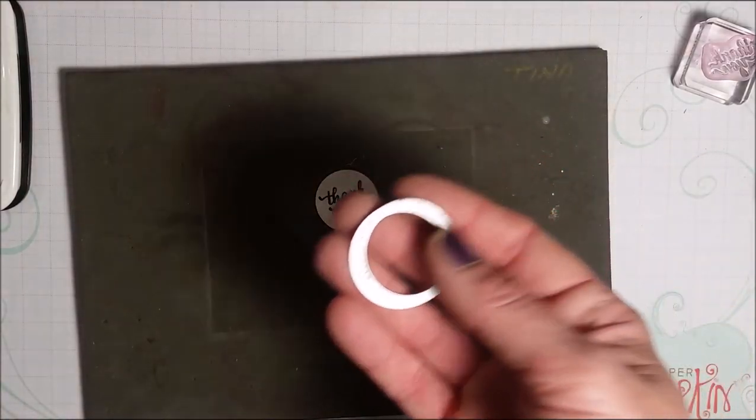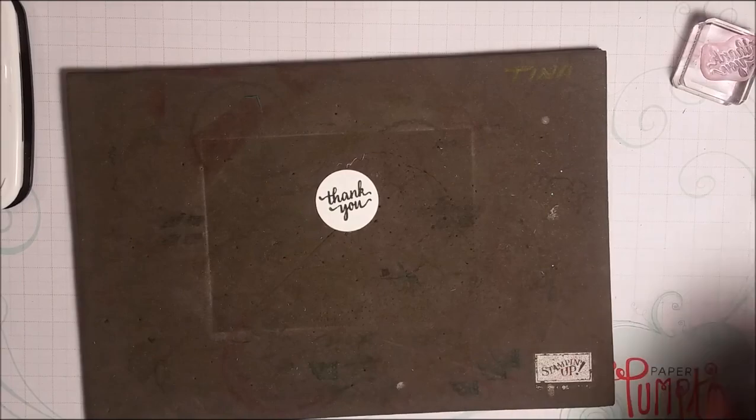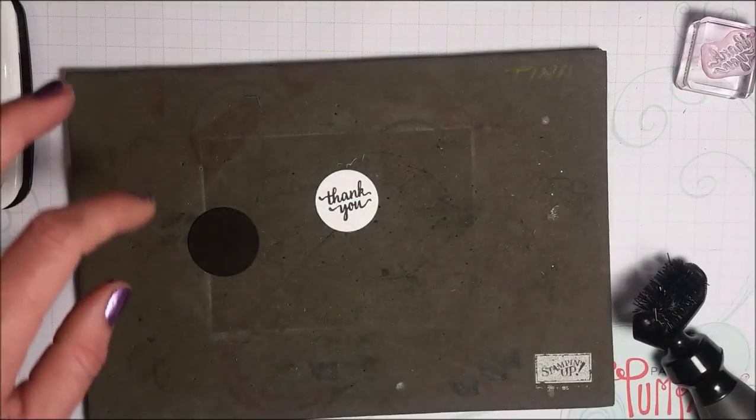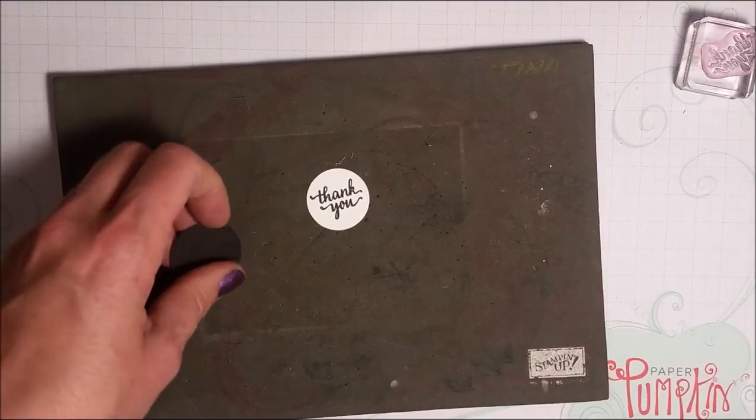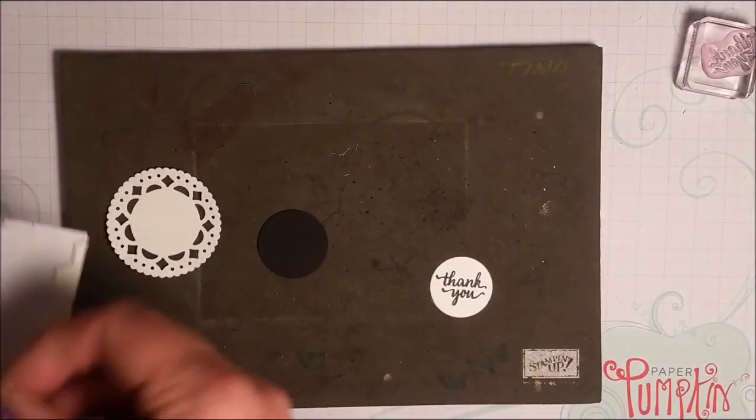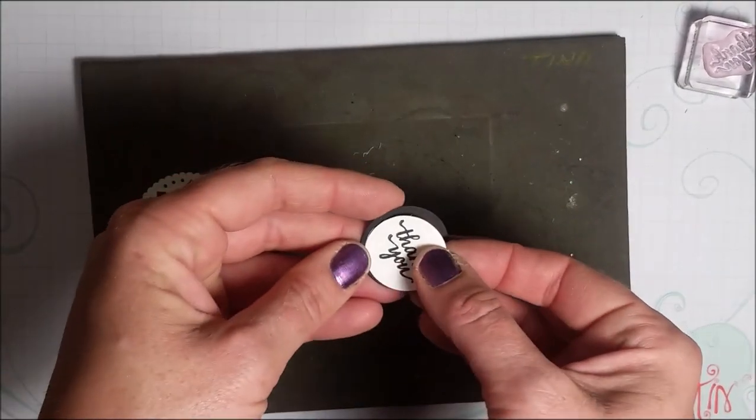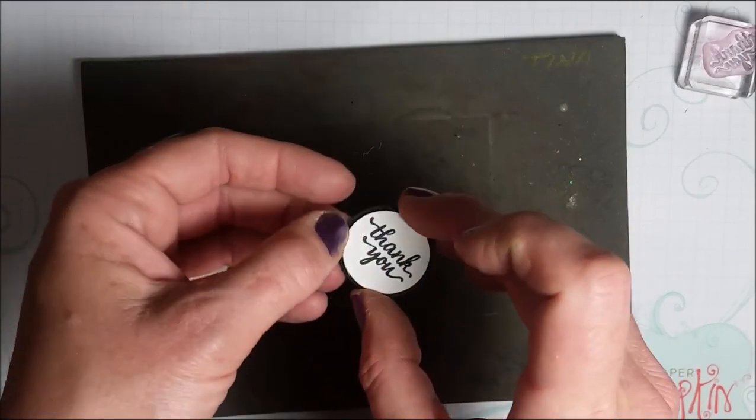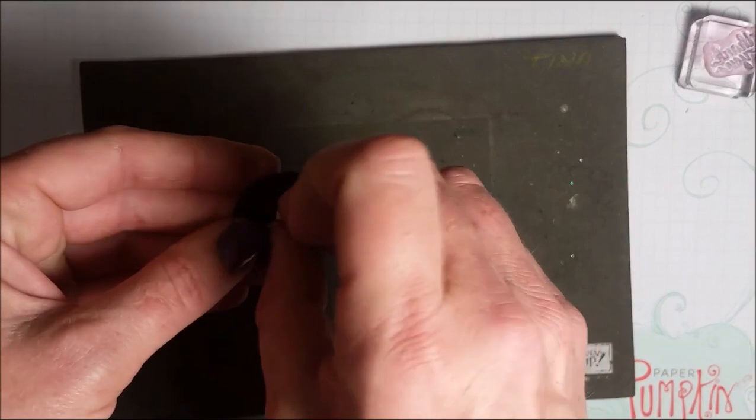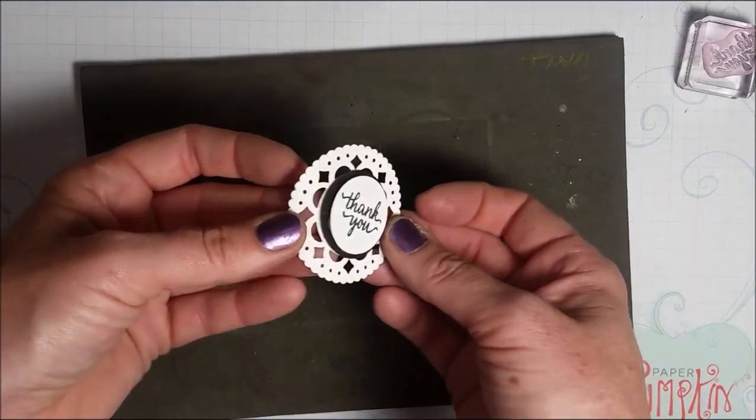And now, I'm going to take my one and one quarter circle punch and punch out a piece of black. So, I'm going to stick a dimensional behind my thank you and layer that onto my piece of basic black one and one quarter inch circle. Then, I'm going to take another dimensional. And that fits in here beautifully. Right in the center.